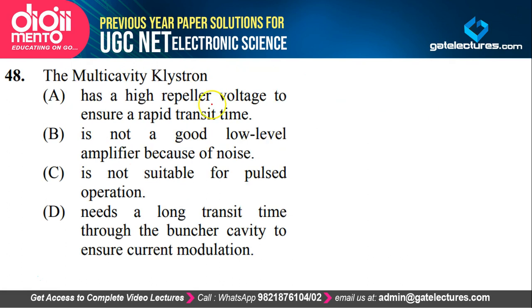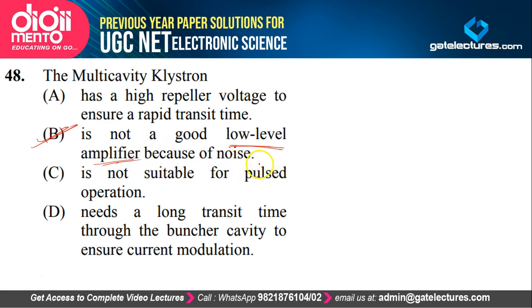Multi-cavity klystron: they have given four statements. It has a high repeller voltage to ensure a repeat transit time; it is not a good low-level amplifier because of noise; it is not suitable for pulse operation; it needs a long transit time through the buncher cavity to ensure current modulation. Multi-cavity klystron is actually not a good low-level amplifier because of noise — noise in it increases as frequency increases, so we don't use it for low-level amplification. The correct option is option B.